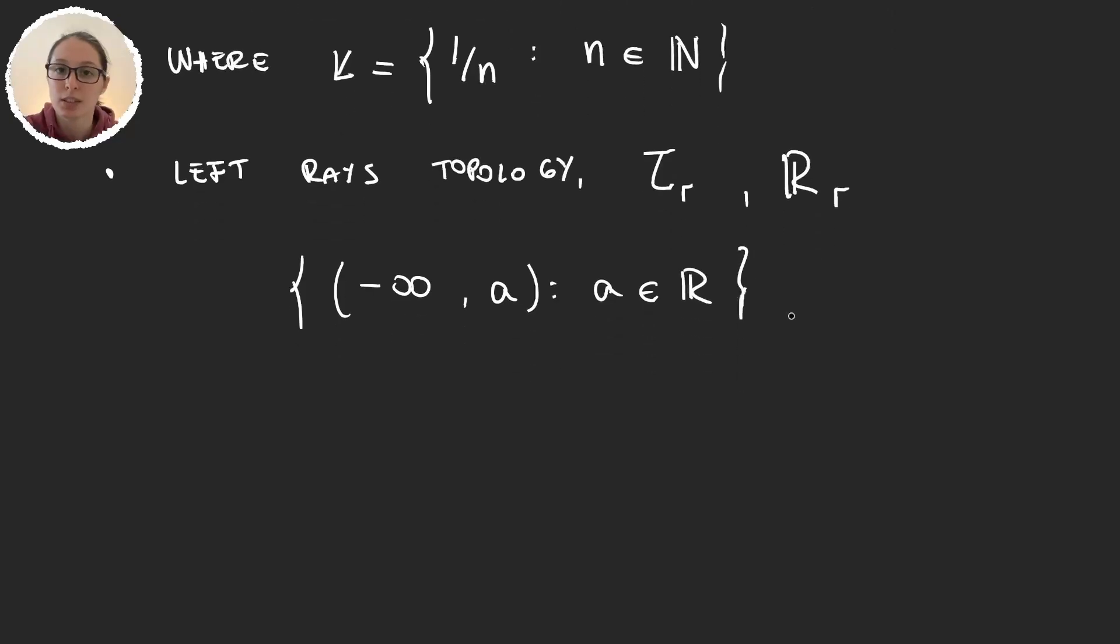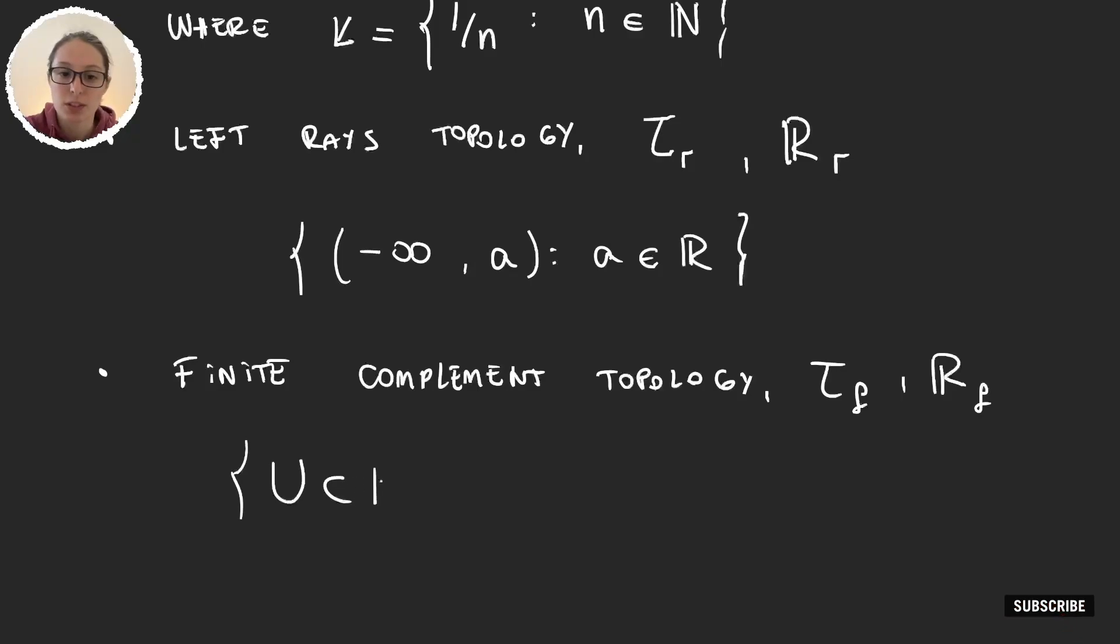And the next two topologies are two that we have actually worked with already. The finite complement topology, denoted by τ_f or ℝ_f, and it's formed by all the sets U subsets of the real numbers such that ℝ minus U is finite or it's the real numbers.